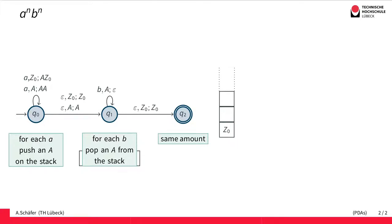To summarize, to recognize this non-regular language with N A's followed by N B's—the same amount—we first have a state where we push half of the word onto the stack to count the A's. For each lowercase a we read, we push one uppercase A onto the stack.